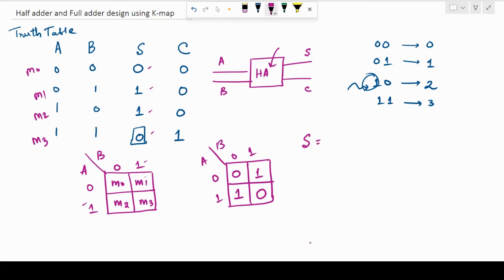But right now, for this case, the sum is going to be nothing but this truth value which represents nothing but A bar B because for this one, A is value 0 and B's value is 1.